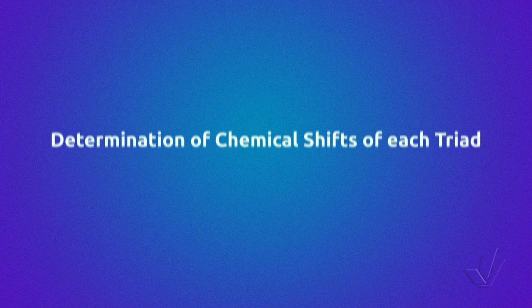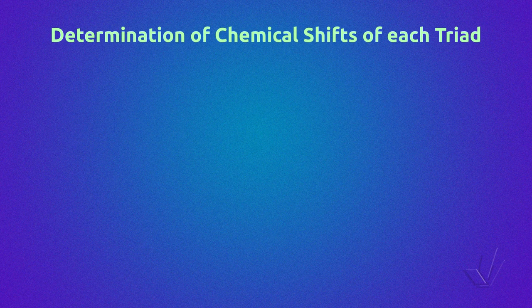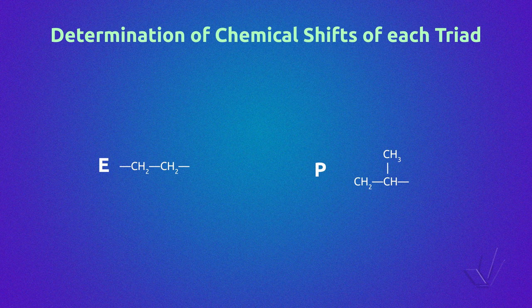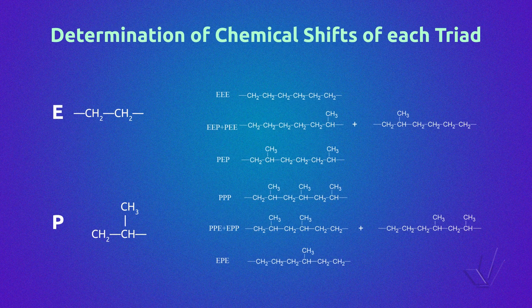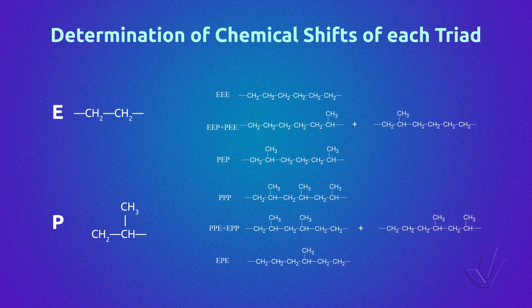The ethylene-propylene copolymer has the monomeric units ethylene and propylene, named by the letters E and P. The copolymer has six possible triad sequences: EEE formed by three ethylene units, the asymmetric triad EEP and PEE, and the PEP triad, all of them centered in ethylene.